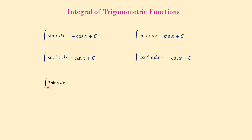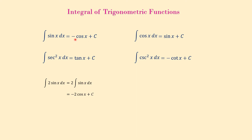The integral of 2 sine of x dx: we pull the constant 2 out in front of the integral, and then integrate sine of x. Based on the rule, the integral of sine of x is negative cosine of x, so multiplying by 2 gives us negative 2 cosine of x plus C.